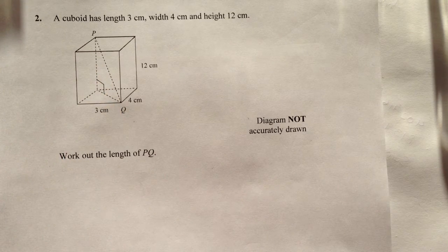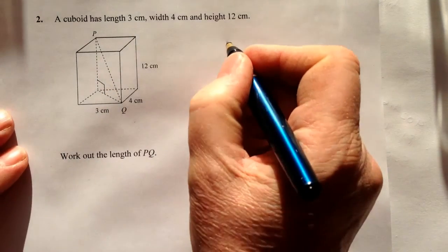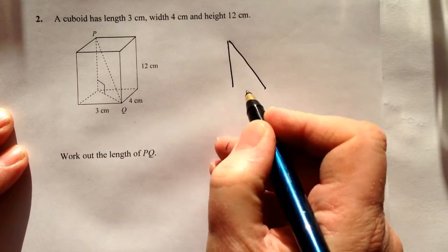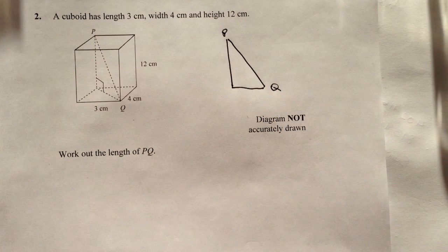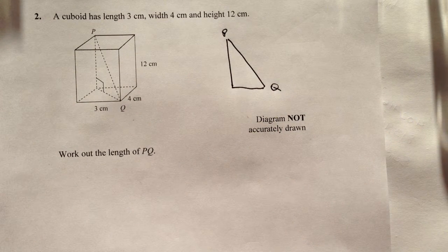So if we look at that particular triangle, what we've got is something like this where we know this is P and Q, and that's what they want us to answer the question on.